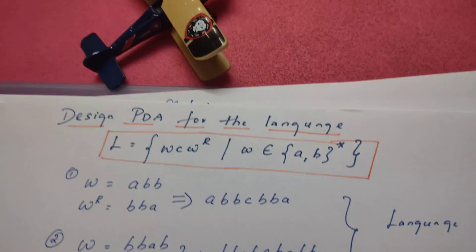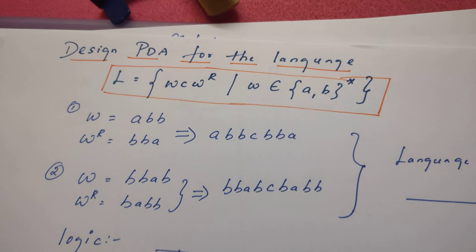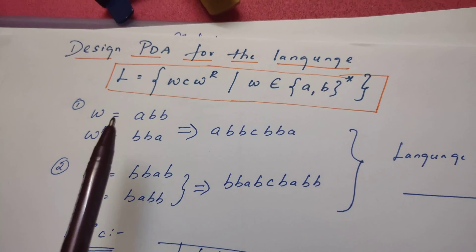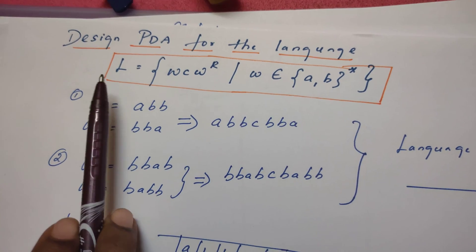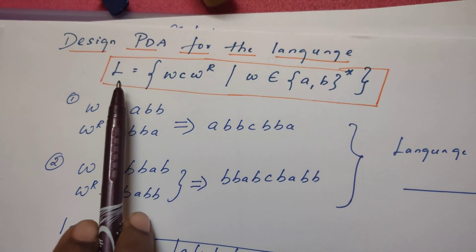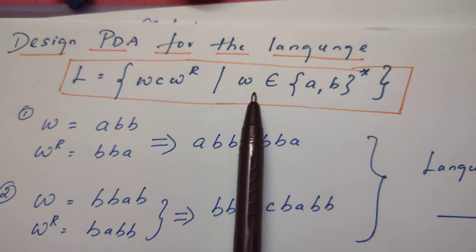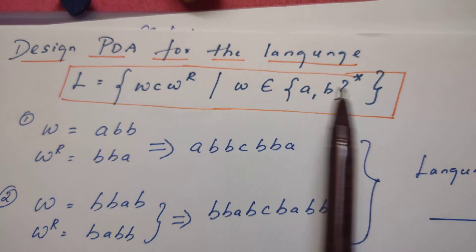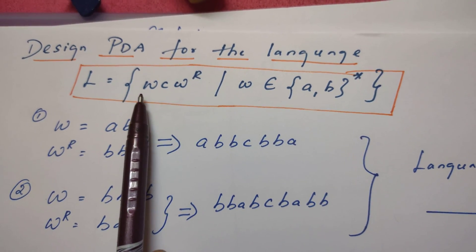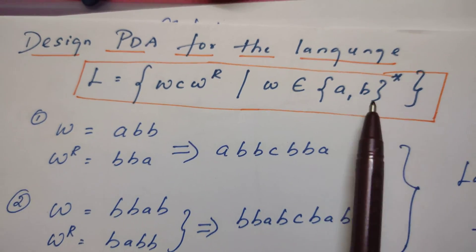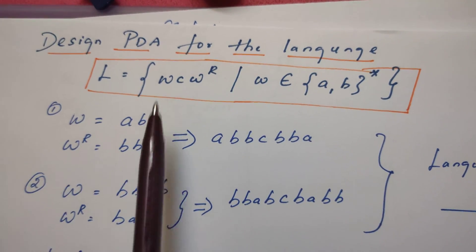Today in this video we are going to see the design of pushdown automata for this language. L is equal to WCW^R, where W belongs to {A, B}* — W is a string of symbols A and B, and W^R is the reverse of W.